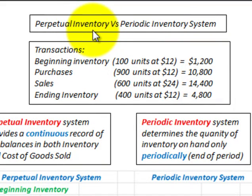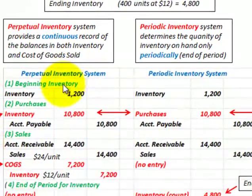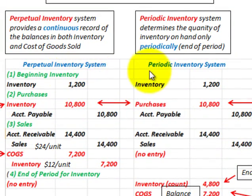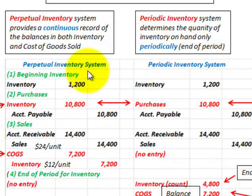Here we're going to be looking at a perpetual inventory system versus a periodic inventory system. First we'll look at a side-by-side comparison to examine the basic differences between these two systems, and then we'll look at a T-account analysis on how each of these systems works.